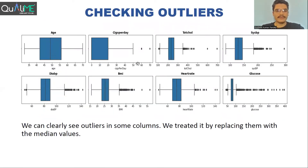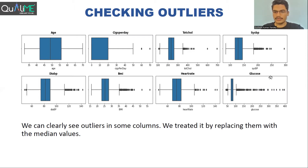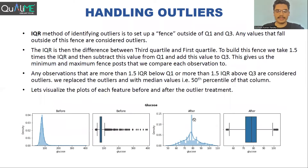After that, we started checking for outliers. Data points outside the whiskers in the box plot represent the outliers — for cigarettes per day, total cholesterol, systolic BP, and the remaining columns. There are many outliers in the glucose column, as we saw earlier in the distribution. We dealt with outliers using the standard IQR method and replaced all the outliers with the median values.